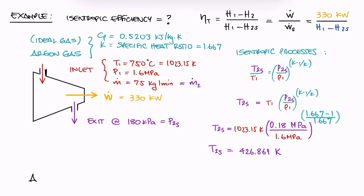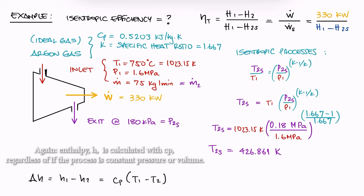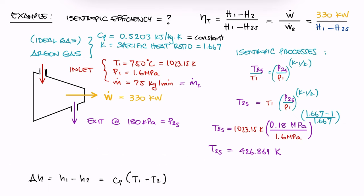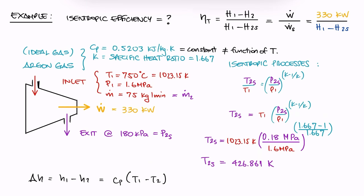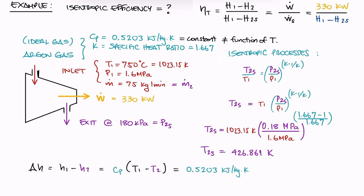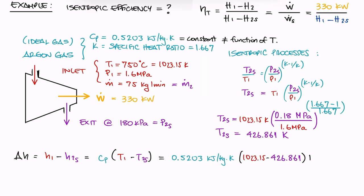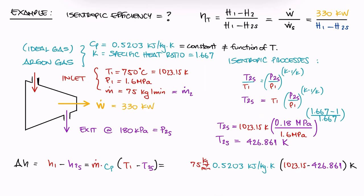And since the change in enthalpy of an ideal gas can be calculated with the specific heat, and we know that the specific heat of argon, an ideal gas, is constant and not a function of temperature, we substitute that value, the value of the two temperatures, and the mass flow rate in kilograms per second, not kilograms per minute, to calculate the work produced by the theoretical isentropic turbine.